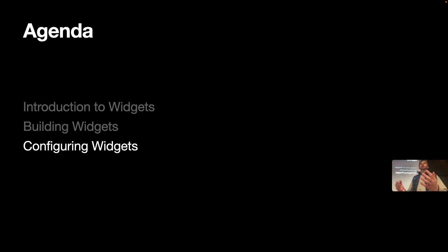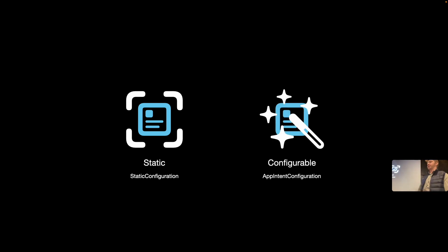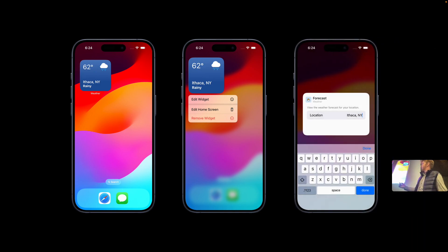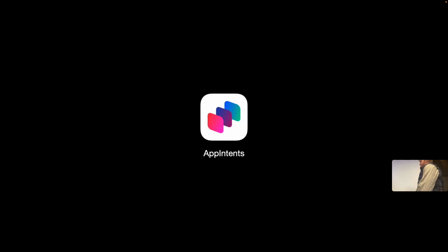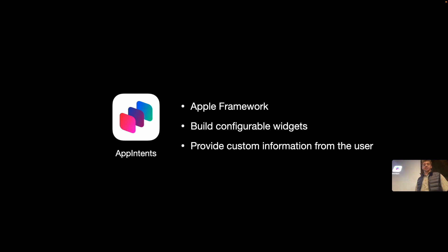Next, we're going to create a configurable widget. We'll take what we have and build on it to allow the user to enter a location and have the widget adapt in response. We previously built a static widget using a StaticConfiguration; now we'll build a configurable widget using an AppIntentConfiguration. What will drive this customizability is a framework called App Intents, which allows us to build configurable widgets by providing the widget with custom information from the user.